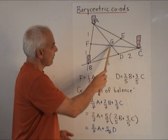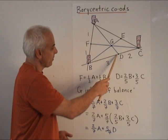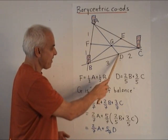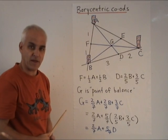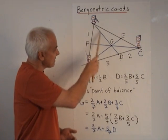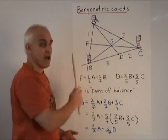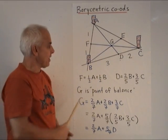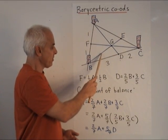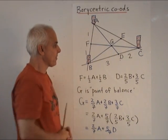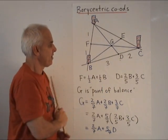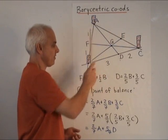And so since that's a point of balance, that must be in the ratio two to five. I'll leave it to you as an exercise now in this triangle to also determine the ratio of this to this, and the ratio of this to this, and the ratio of this to this.